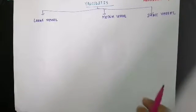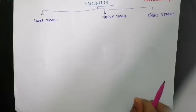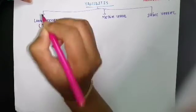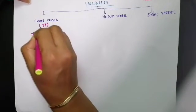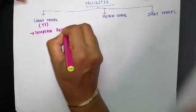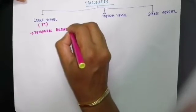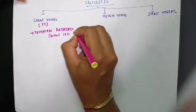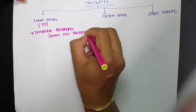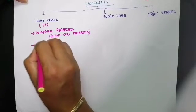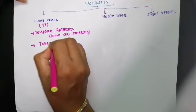The large vessel vasculitides are two in number. You can remember them using the mnemonic 'TT' since both start with the letter T. The first is Temporal arteritis, also known as Giant Cell arteritis. The second is Takayasu arteritis.